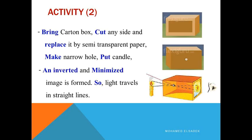In order to prove that you can form an inverted and minimized image through narrow holes, you have to bring a carton box and you have to cut any side of this box, and try to make a narrow hole in the opposite side. Put a candle in front of the narrow hole, and in the opposite side put semi-transparent paper.